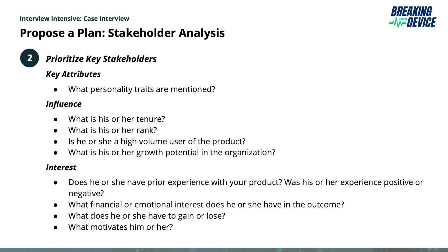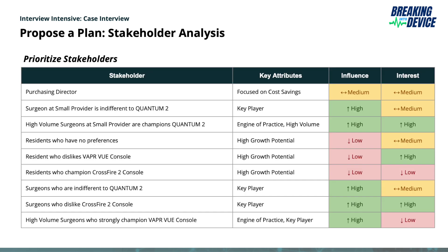The next step is to go ahead and actually prioritize the stakeholders. Let's look at this table we've prepared. On the left-hand side we have stakeholders — this is where we map out all the different stakeholders we found, for example the purchasing director, the surgeon at the small provider who is indifferent to the Quantum 2, and high-volume surgeons at the small provider who are champions of the Quantum 2. Next we have different key attributes that are mentioned, and you can distill these key attributes.